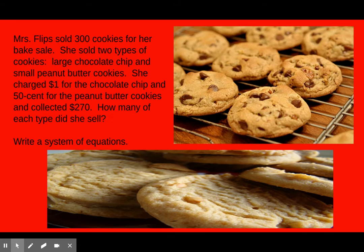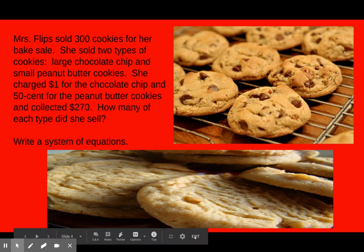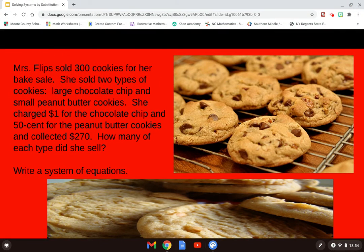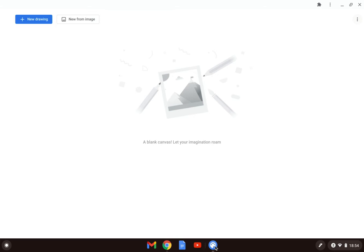Let's look at our first word problem. Mrs. Flip sold 300 cookies for her bake sale. She sold two types of cookies: large chocolate chip and small peanut butter cookies. She charged $1 for the chocolate chip and 50 cents for peanut butter cookies, and collected $270. How many of each type did she sell? Write a system of equations. To do this, we're going to write two equations in standard form.